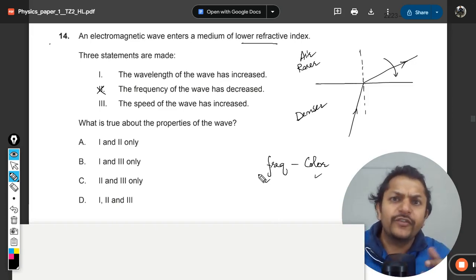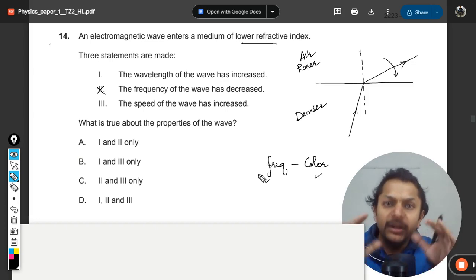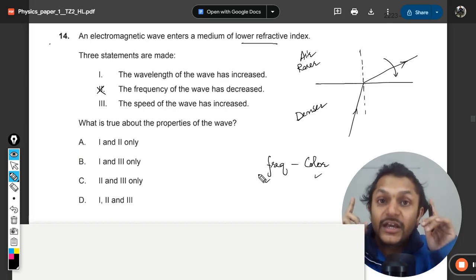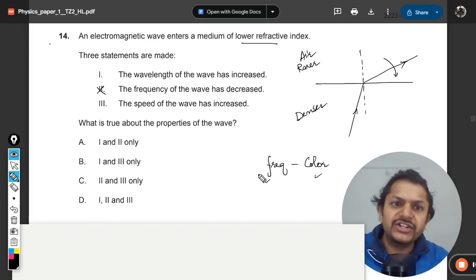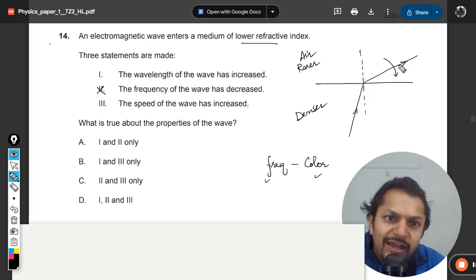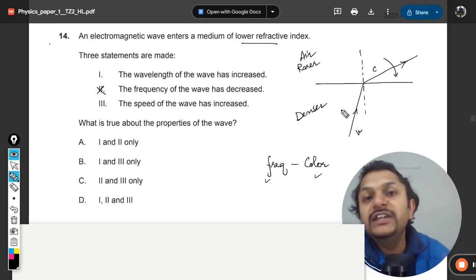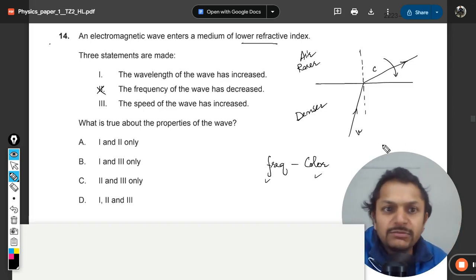But what will change? Now in the air, the velocity increases. Here the velocity will be v, and here the velocity of the light will become c, and c will definitely be the maximum.